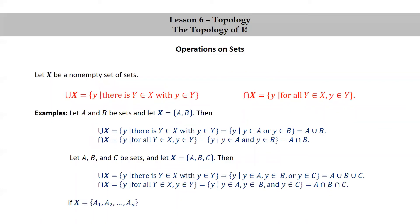More generally, if X consists of N sets, say A1, A2 through AN, then union X is A1 union A2 union ... union AN. And intersection X is the intersection of these N sets, A1 intersect A2 intersect ... intersect AN.